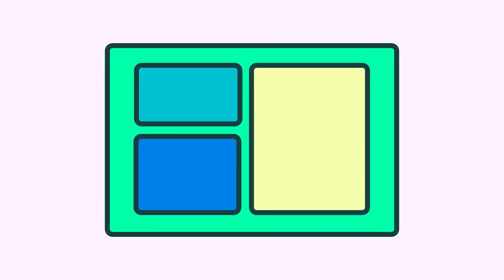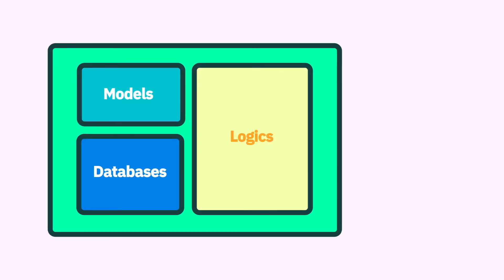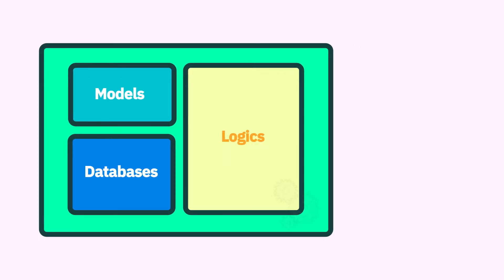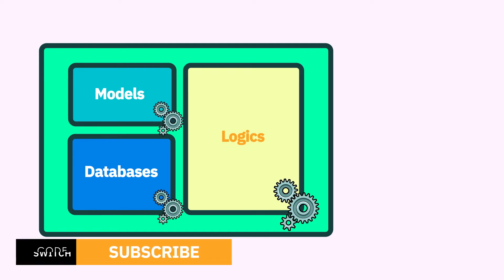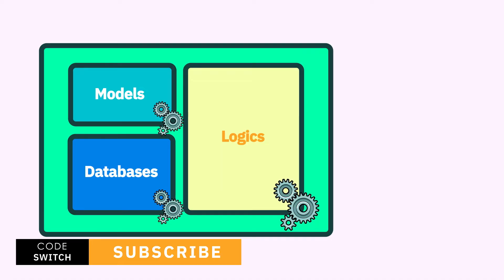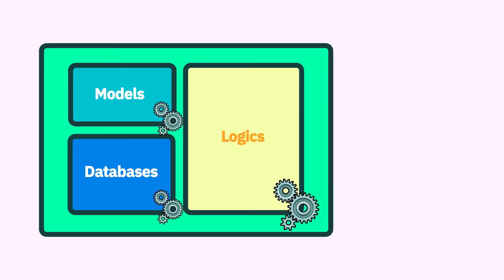This is a poorly designed application which contains different modules like models, databases, logics — all tightly integrated. And one day you want to make some changes to the logic. But due to tight coupling between the modules, changes in one module have a significant effect on the other. This application is neither scalable nor extendable. This is happening due to a lack of proper architecture to the project.